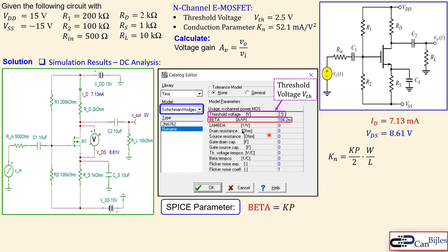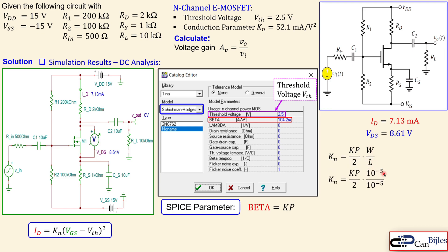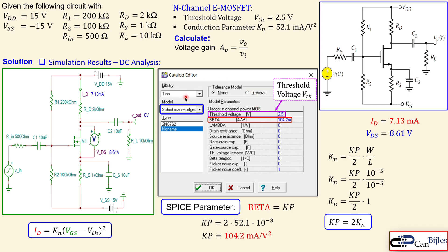The SPICE parameter Kp (beta) relates to KN by: KN = (Kp / 2) × (W / L). Using the default W = L = 10 µm, the ratio W/L = 1, so KN = Kp / 2. Therefore Kp = 2 × KN. That is why the SPICE model uses Kp = 100.4 µA/V² to represent our KN = 50.2 µA/V².